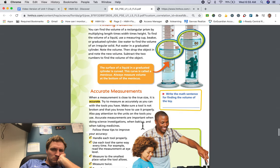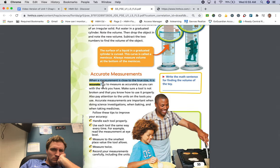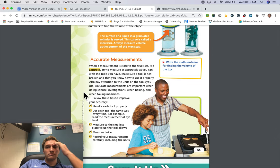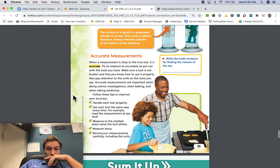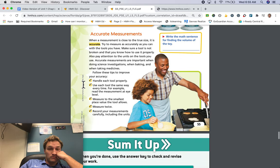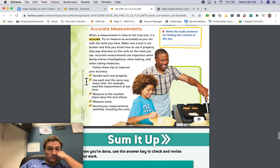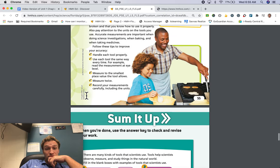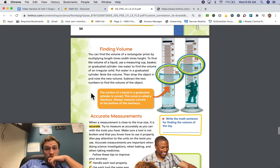Accurate measurements. When a measurement is close to the true size, it is accurate. Try to measure as accurately as you can with the tools you have. Make sure a tool is not broken and that you know how to use it properly. Also, pay attention to the units on the tools you use. Accurate measurements are important when doing science investigations, when baking, and when taking medicines. Follow these tips to improve your accuracy. Handle each tool properly. Use each tool the same way every time. For example, read the measurement at eye level. Measure to the smallest place value the tool allows. Measure twice. Record your measurements carefully, including the units. Write the math sentence for finding the volume of the toy.